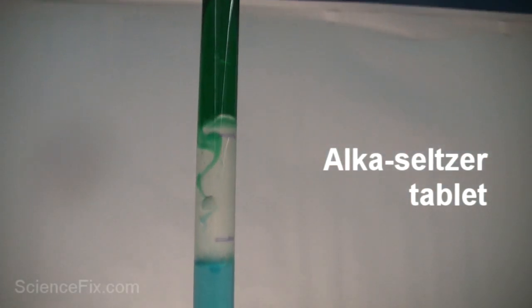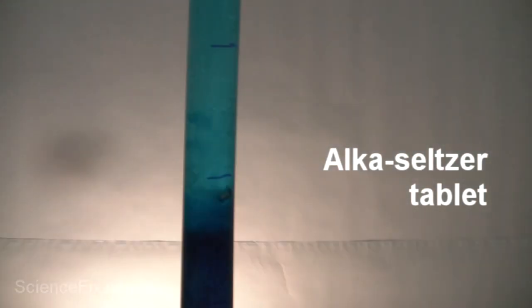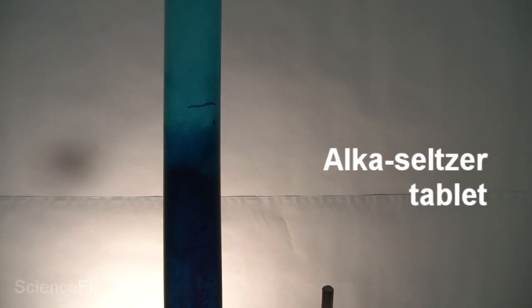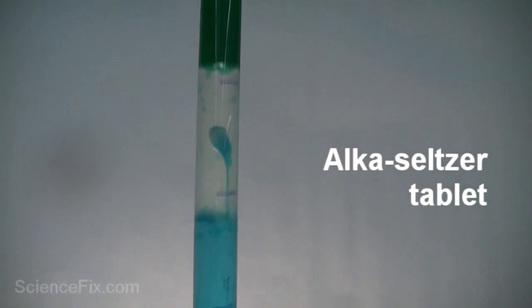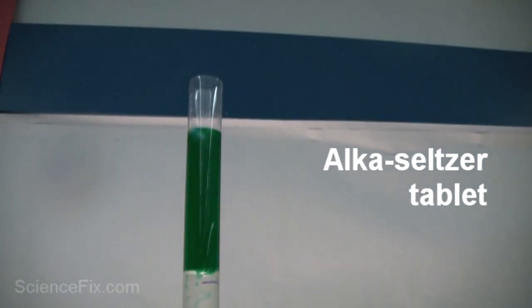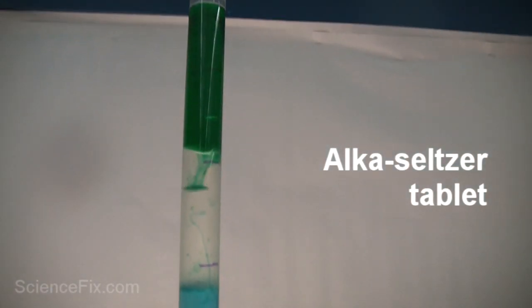What's going on here? Well, the Alka-Seltzer tablet, the chemicals that are in that tablet, react with the water to produce carbon dioxide gas. And carbon dioxide gas has more space between the matter than the liquids do. So that gas is less dense than all the liquids.